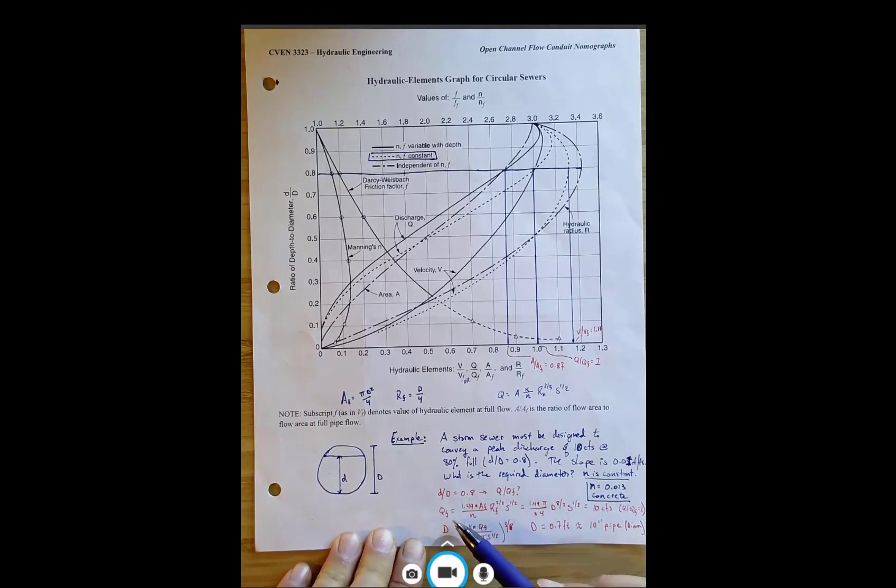So qf is going to be equal to the Manning's equation. And so that's this coefficient, because we're dealing with feet, that coefficient is equal to 1.49 times the area at full divided by n, the hydraulic radius at full, and then the slope, raised to the power of two thirds and one half.